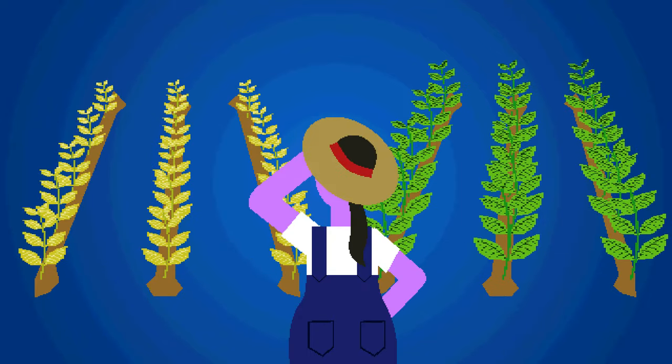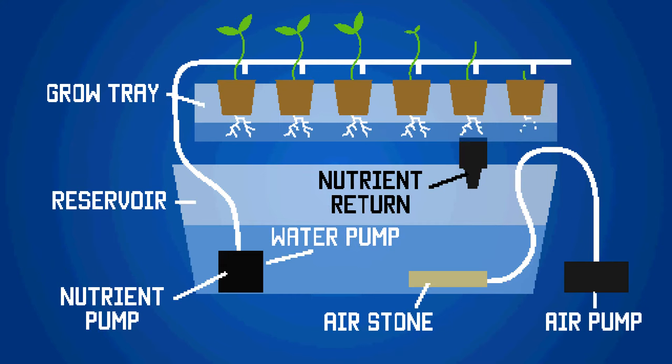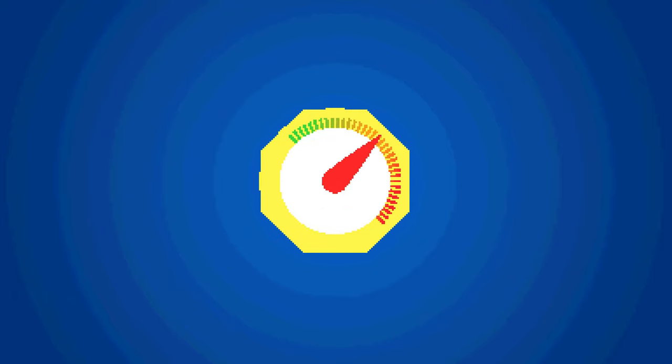Nutrient availability is of crucial importance for farmers, as plants without all of the nutrients they need will grow slower and produce smaller yields like less fruit. Hydroponics is a new type of agriculture where plants are not grown in soil. Instead, their roots are suspended in water with nutrients. This way, the farmer has much more control over the minerals in the solution.